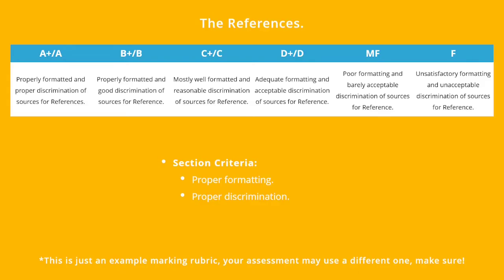So here's a marking rubric for the references section. There are only two criteria: formatting and discrimination. We'll touch on both of these aspects; however, the research writing quickies will also be necessary if you need to get up to scratch with what is meant by discrimination.